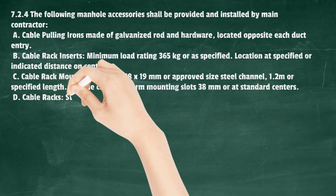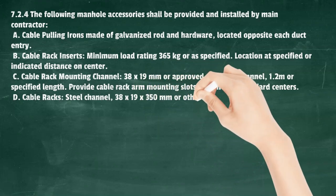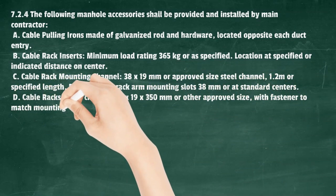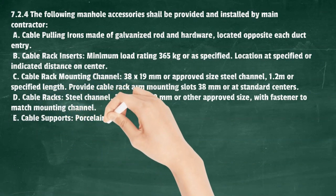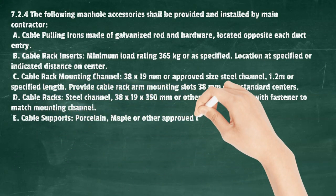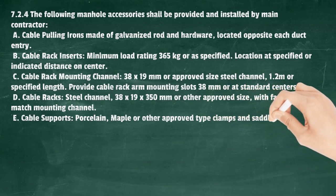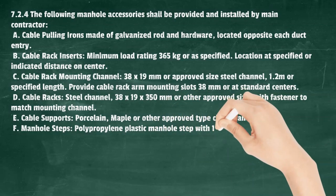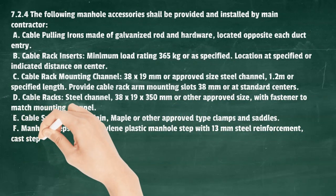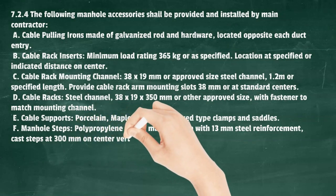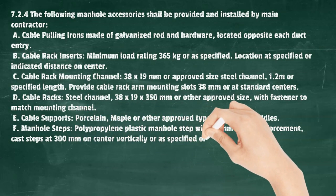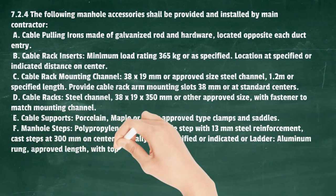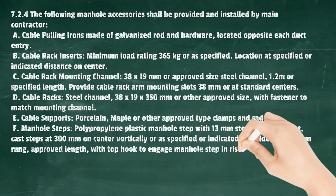D) Cable racks, steel channel 38 x 19 x 350 mm or other approved size, with fastener to match mounting channel. E) Cable supports: porcelain, maple, or other approved type clamps and saddles. F) Manhole steps: polypropylene plastic manhole step with 13 mm steel reinforcement, cast steps at 300 mm on center vertically or as specified; or ladder, aluminum rung, approved length, with top hook to engage manhole step in riser casting.